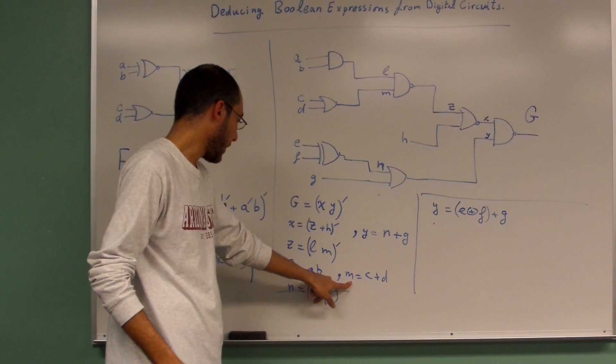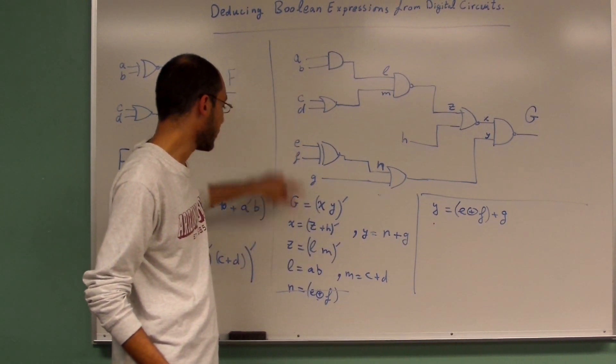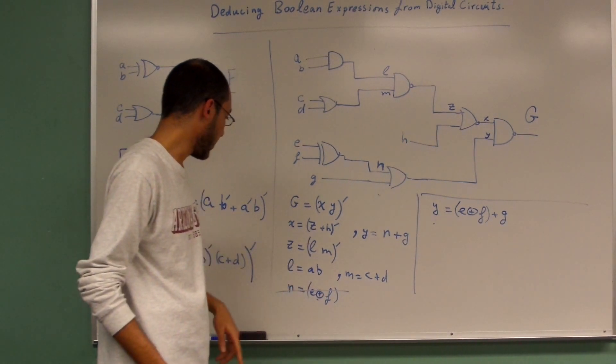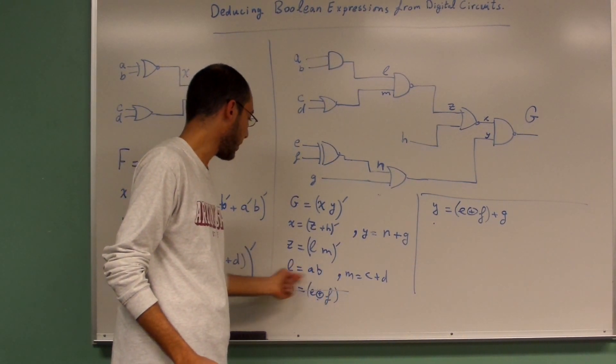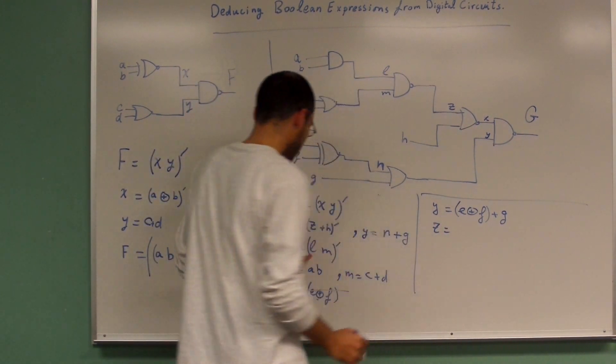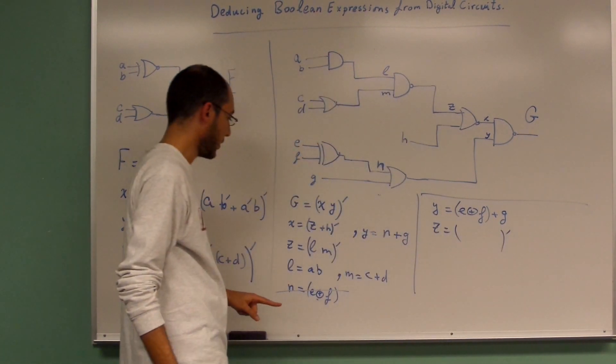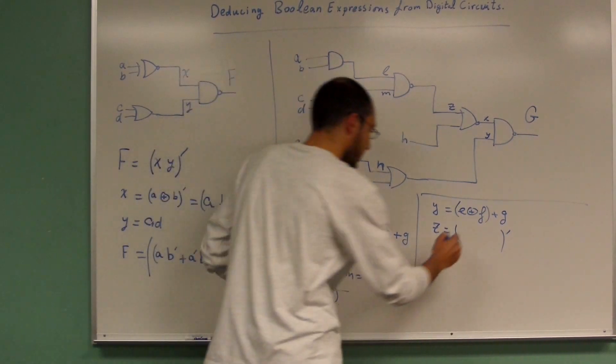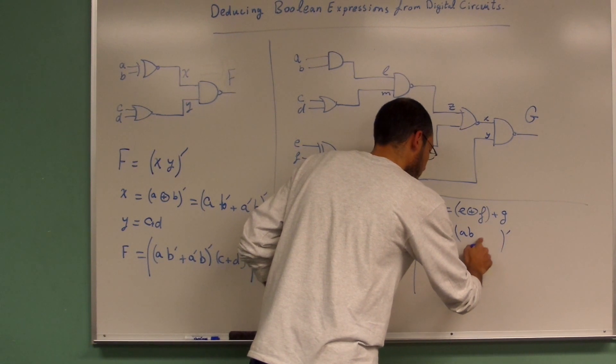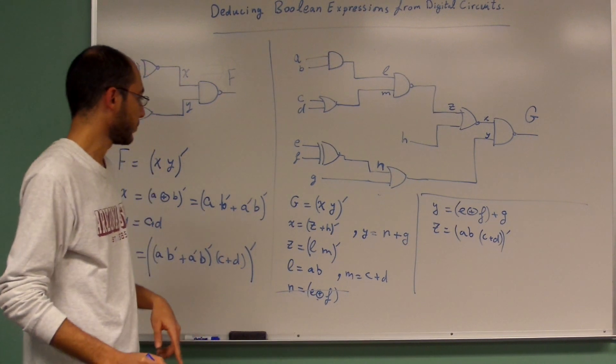Later on we have M which is C plus D—those are variables that are given to me already, so there's no need to substitute that. And L equals A multiplied by B. So let's multiply these two together to get Z. What is Z? Z equals L multiplied by M all bar, so I'll put the bar: A B multiplied by C plus D, all bar.